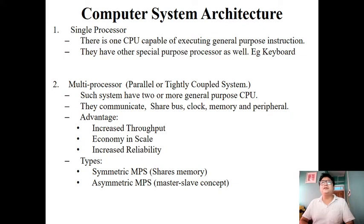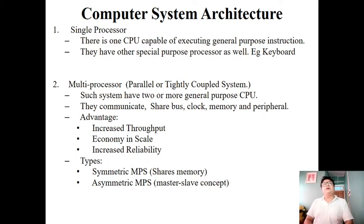This kind of system has greater than or equal to two general-purpose CPUs. CPU is basically hardware. This kind of system shares various computer resources like the computer bus, memory, and various peripheral devices like mouse, keyboard, etc.